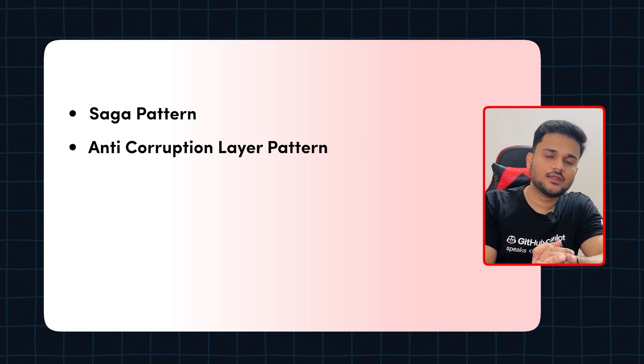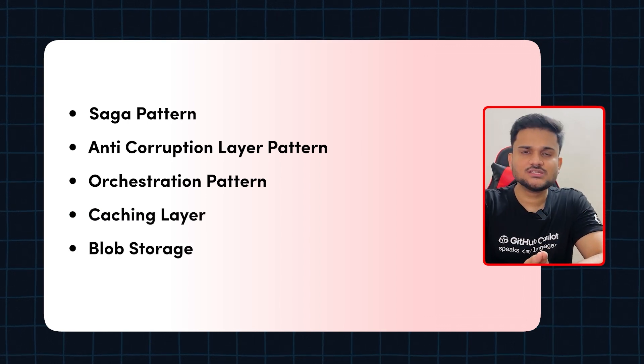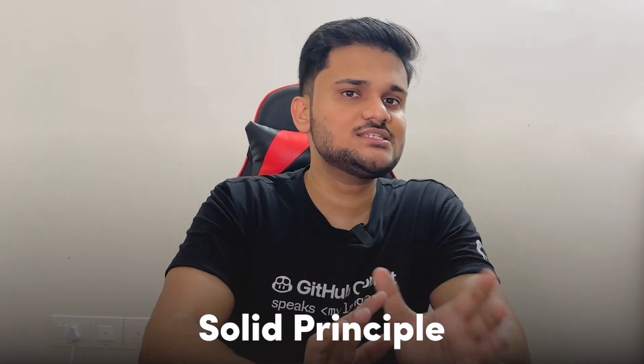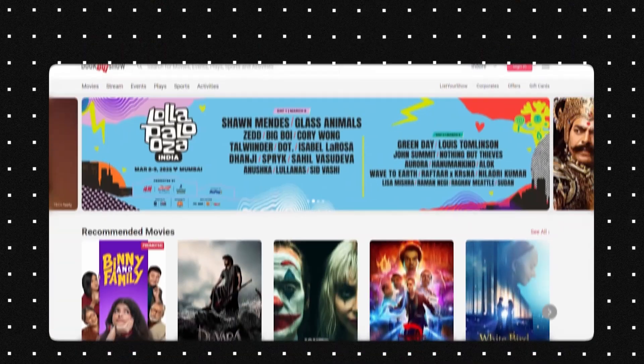There are tons of high-level design problems and interesting system design concepts added, including design patterns like the saga pattern, anti-corruption layer pattern, orchestration pattern, and aspects around caching layer and blob storage. For low-level design, we'll cover SOLID principles, tons of design patterns, and solve problems like designing your own logger, a chess game, a Book My Show system, and Splitwise. This low-level design section will technically prepare you for any kind of LLD, object-oriented interview, or machine coding interview.